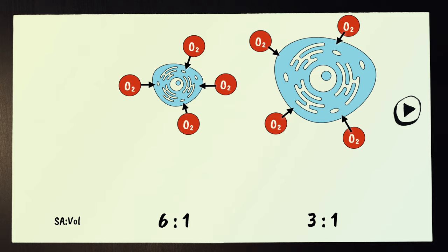Compared with the larger cell, it would take too long for the center of the larger cell to be supplied with what it needs. If a large organism were made of a single cell, the exchange of materials simply wouldn't happen fast enough.